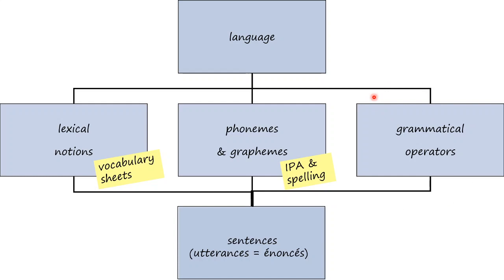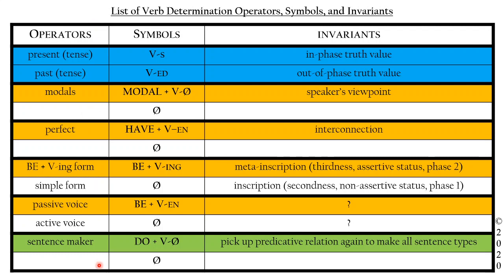We're working on grammar operators, which are one part of any given language. In any given language, there are three parts: vocabulary, pronunciation, and spelling. You need to work on these, which are really important for you to improve your knowledge of English or of any language, before you can make sure you choose the right grammar tools — grammar operators — to glue those words together and make sentences that are correct. The grammar operators we're working on are essentially verb operators, for which we have made a list.